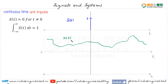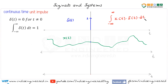We are given δ(t) and an arbitrary x(t), and we are asked to find the integral from minus infinity to infinity of x(t) times δ(t) dt. Whenever we are dealing with integrals, always recheck the variable of integration and the limits. In this case, the variable of integration is t. Now let's solve this.